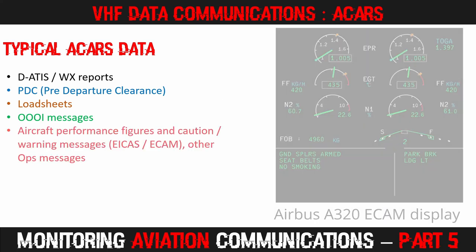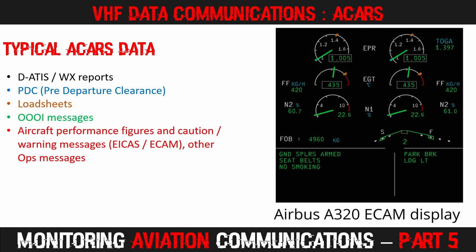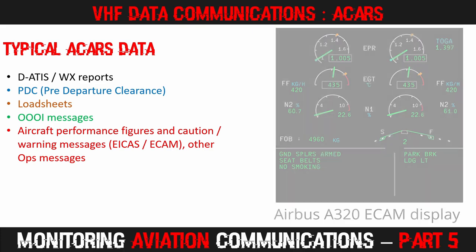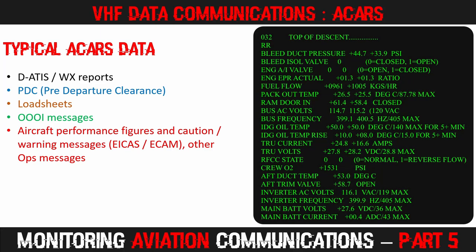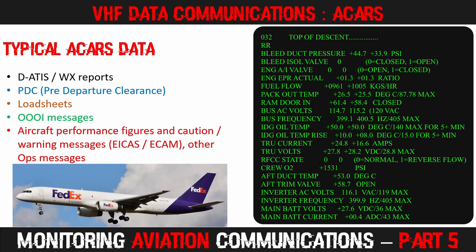Throughout the flight, further aircraft performance data, caution and warning messages, engine data, EICAS and ECAM messages will be automatically broadcast. Here is a top of descent report automatically generated from a FedEx Boeing 757 as it began its descent. The items are listed making it much easier to interpret the data than the take-off data we just saw. We can see there are two columns representing the two engines and associated systems: duct pressures, engine EPR values, fuel flows, electrical bus voltages and frequencies, oxygen system pressure, and more — right down to the main battery voltage, current drain and state of charge.